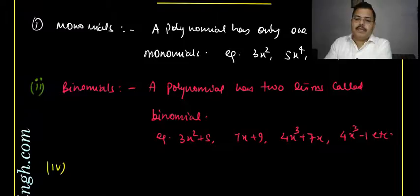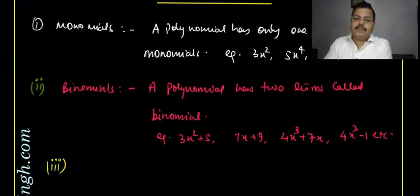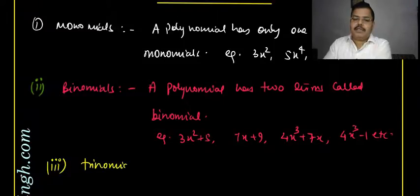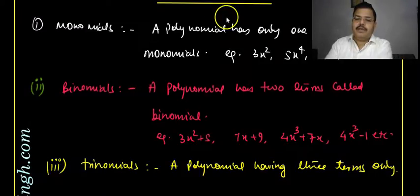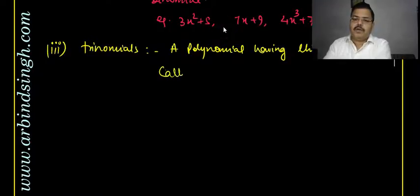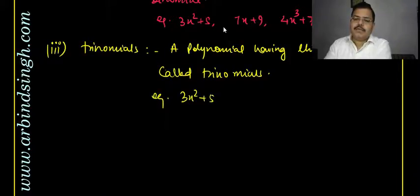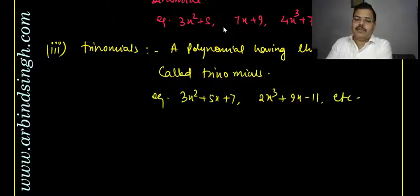The third type is trinomials — a polynomial having three terms only is called a trinomial. For example: 3x² + 5x + 7, or 2x³ + 9x − 11. These are trinomials because there are exactly three terms.